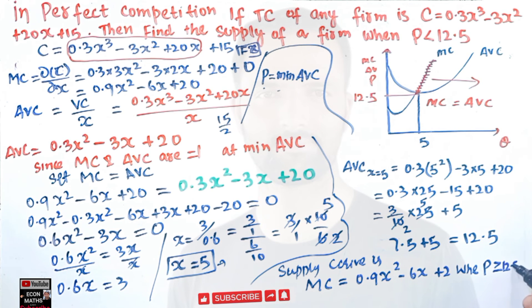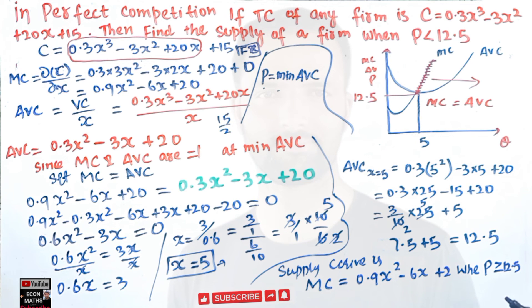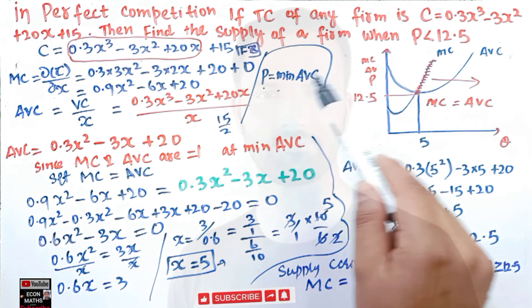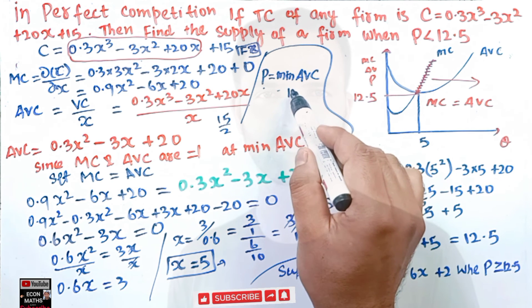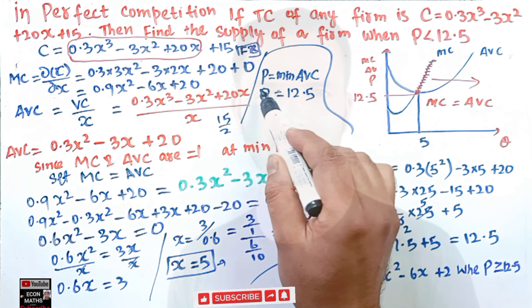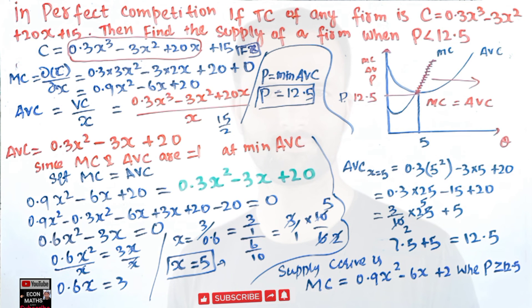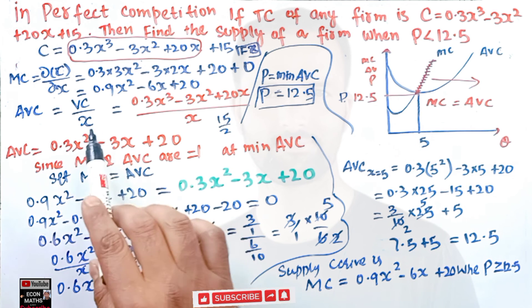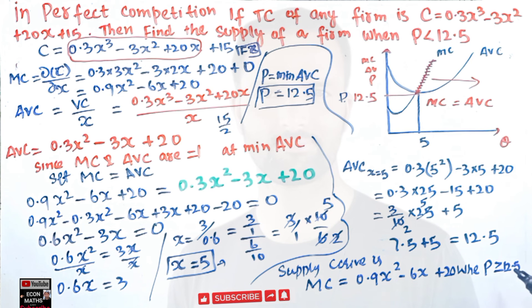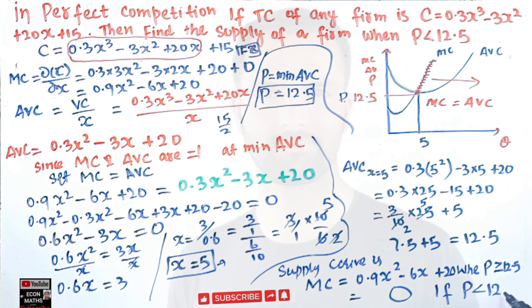To summarize: price equals minimum AVC = 12.5. At five units of output, our supply function is 0.9x² - 6x + 20. So whenever price is greater than or equal to 12.5, the supply function applies. If price is less than 12.5, supply equals zero — the firm shuts down.